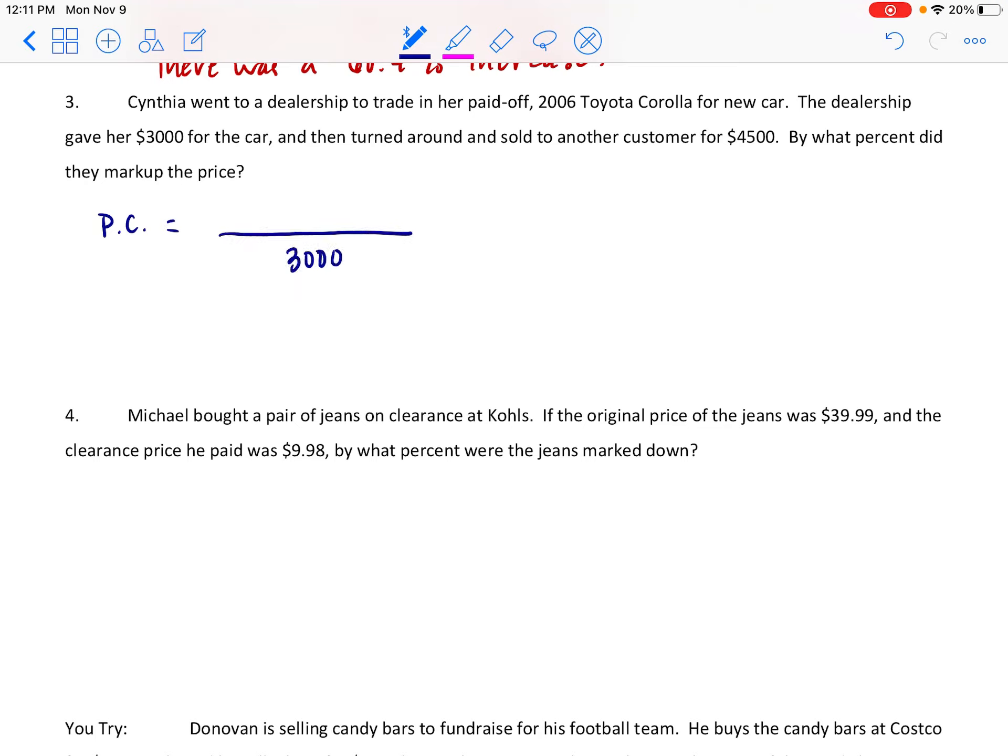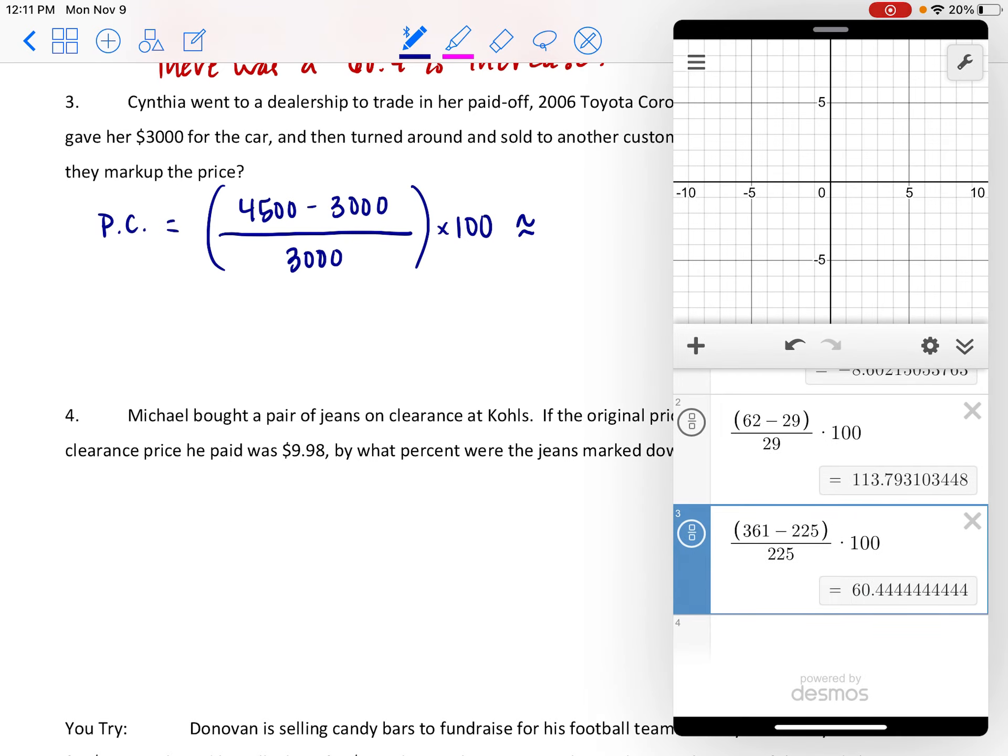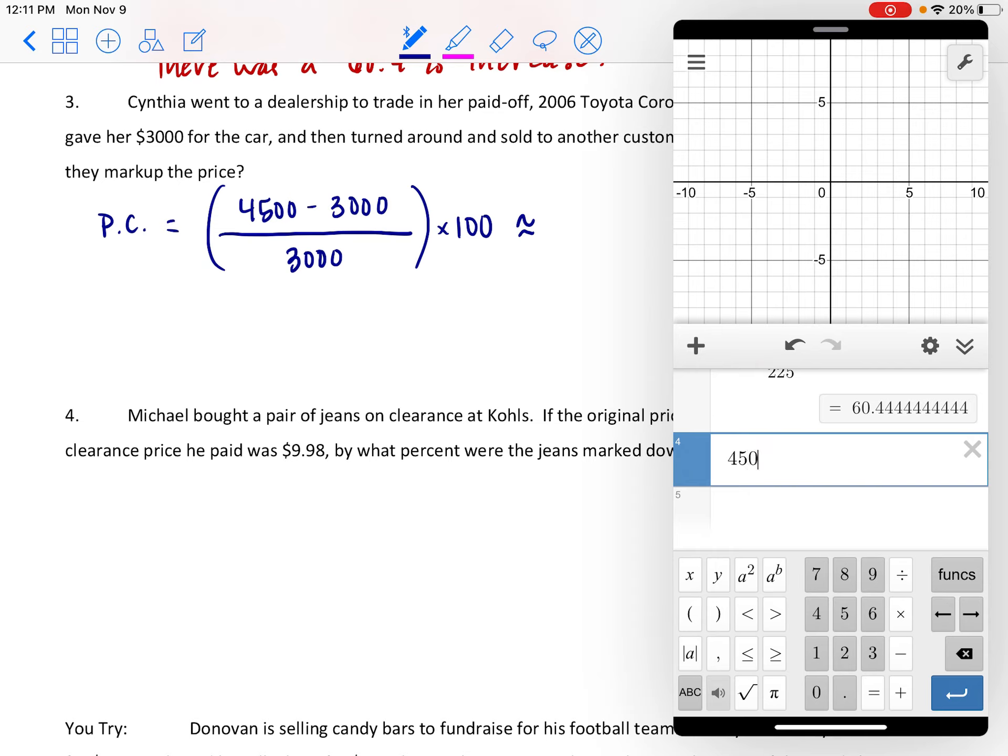Let's figure out the percent change here. It's called a markup this time because it's dealing with the price, but it is the percent change in that amount of that vehicle or the cost of the vehicle. So initially they bought the car from her, they gave her 3000 for it, so that's the initial amount. And then they sold it for 4,500. So we want the change in the amounts on the top, so 4,500 minus the 3000. I put the bigger number first because we want a positive. The price is going up, the cost is going up. And that fraction is going to be multiplied by a 100.